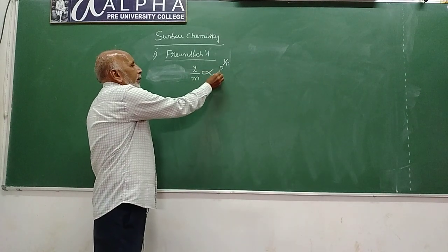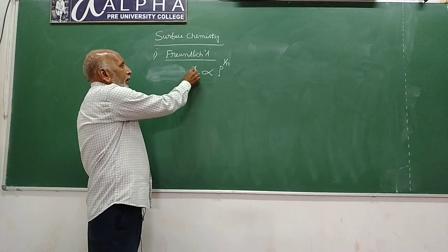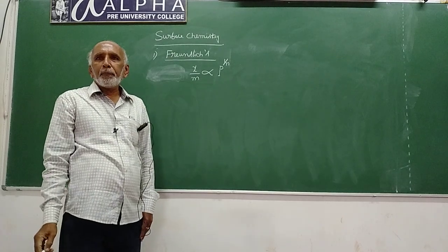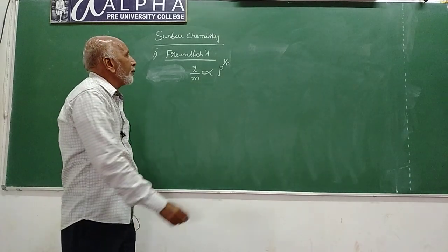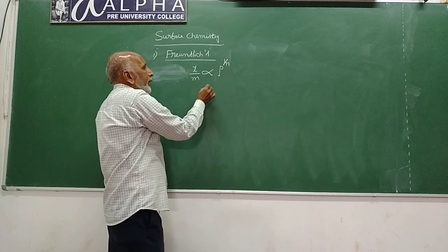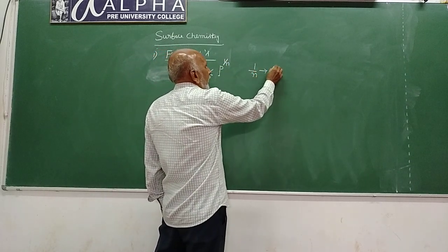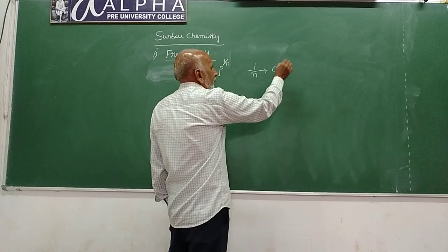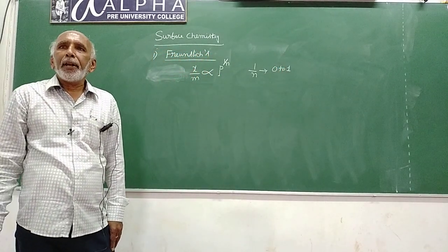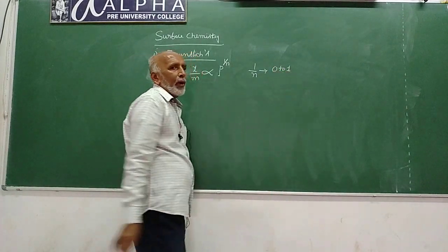Here, p is pressure, x is amount of adsorbate, and m is adsorbent. The value of 1 by n takes values from 0 to 1, that is above 0 and below 1.